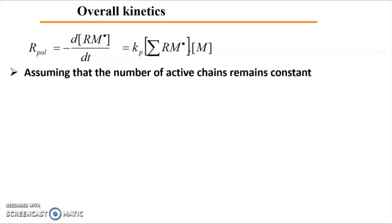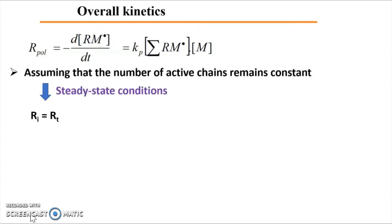To correlate all the kinetic expressions together, we assume that the number of active chains remains constant in the medium. This assumption implies that whenever termination occurs — consuming propagating active chains and radicals — new chains must be initiated to maintain that number constant. Therefore, the rate of initiation must equal the rate of termination. This is what we call steady-state conditions during radical polymerization, and this assumption is typically valid for a short time during polymerization.